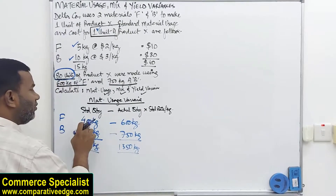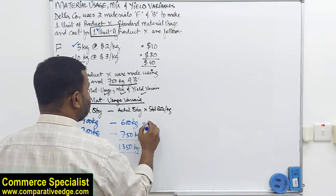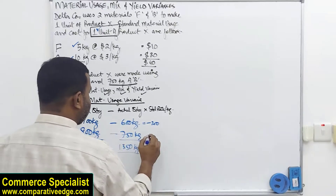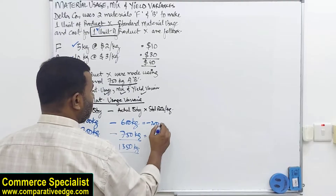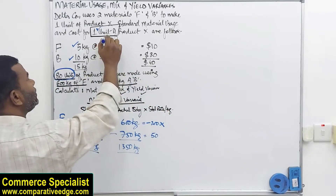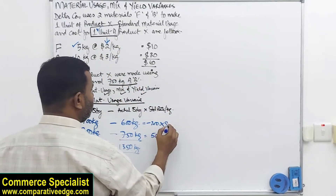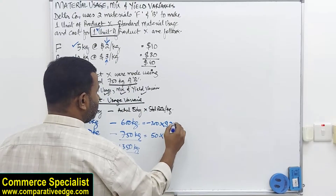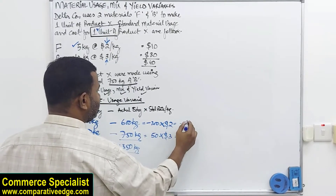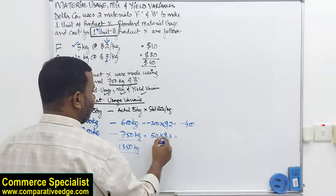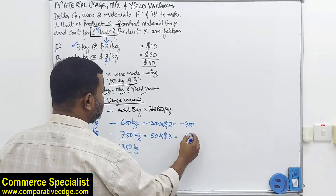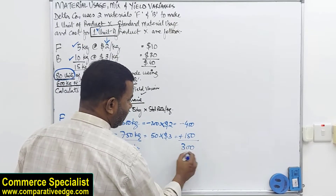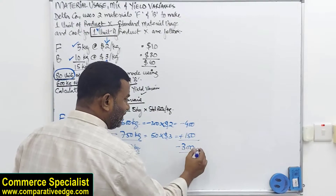400 minus 600 gives minus 200 for F, and 800 minus 750 gives positive 50 for B. Multiplying by standard rates: (−200) × $2 = −$400 and (+50) × $3 = +$150. The net result is −$400 + $150 = −$250... giving a net adverse variance of $300 adverse overall.